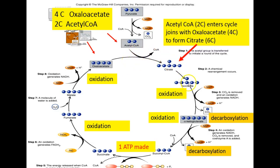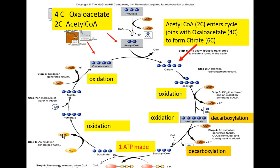The tricarboxylic acid cycle runs twice per glucose molecule because two pyruvates are created per glucose, producing two acetyl coenzyme A's. Each acetyl coenzyme A goes through the cycle once, producing four oxidation steps: three with NAD+ as the electron carrier producing NADH, and one with FAD as the electron carrier producing FADH2. Also notice the two decarboxylation steps per cycle.